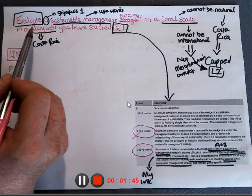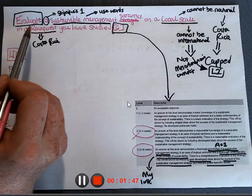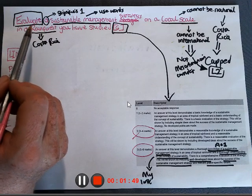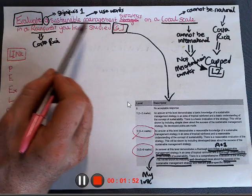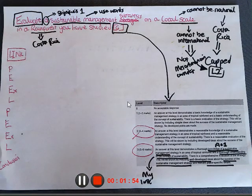So evaluate a, look at the word a, it means one. Sometimes they won't write one, they will write a. A sustainable management strategy on a local scale.